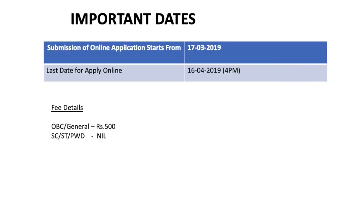If you have an online application, you will have a start and close date. For the fee details, OBC and General candidates are charged 500 rupees. SC/ST and Physically Challenged candidates have a different charge. You can apply online.